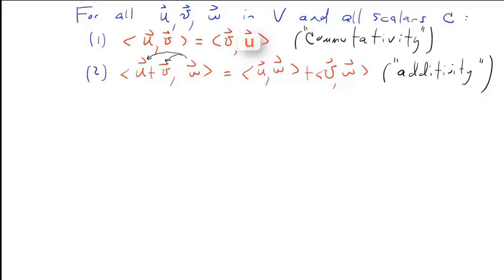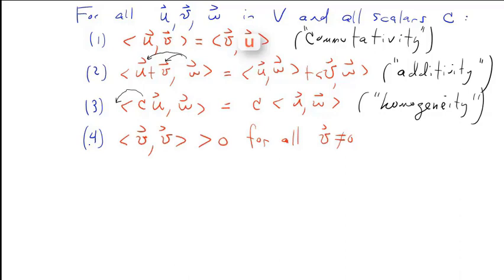Property three: the inner product of cu with w is equal to c times the inner product of u and w. In other words, you can pull the scalar c out in front, and we call this homogeneity. Property four: the inner product of v with itself is always greater than zero for all non-zero vectors v in the vector space. This is called positive definiteness. These are the four properties that an inner product must satisfy.